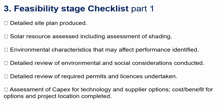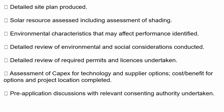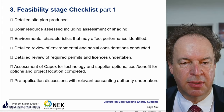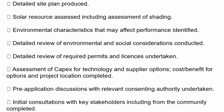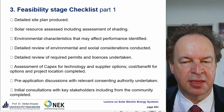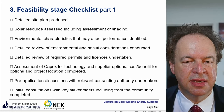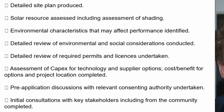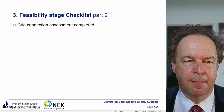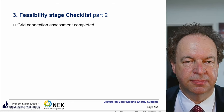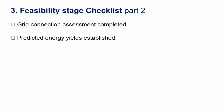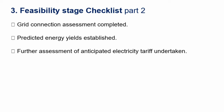That cost-benefit analysis is the most important part for the bank — they want to see the return. Pre-application discussions with relevant consenting authority undertaken — for example a local authority like a mayor or someone responsible for the land. Initial consultations with key stakeholders including the community are completed. Sometimes the community is nervous because they think photovoltaic is ugly, so you have to present detailed plans to show that's not the case, and sometimes the community wants some compensation for changes to the landscape. Grid connection assessment is very important — if you cannot put your electricity on the grid, the whole project is in question. The predicted energy yields are established and a further assessment of the anticipated electricity tariff is undertaken.